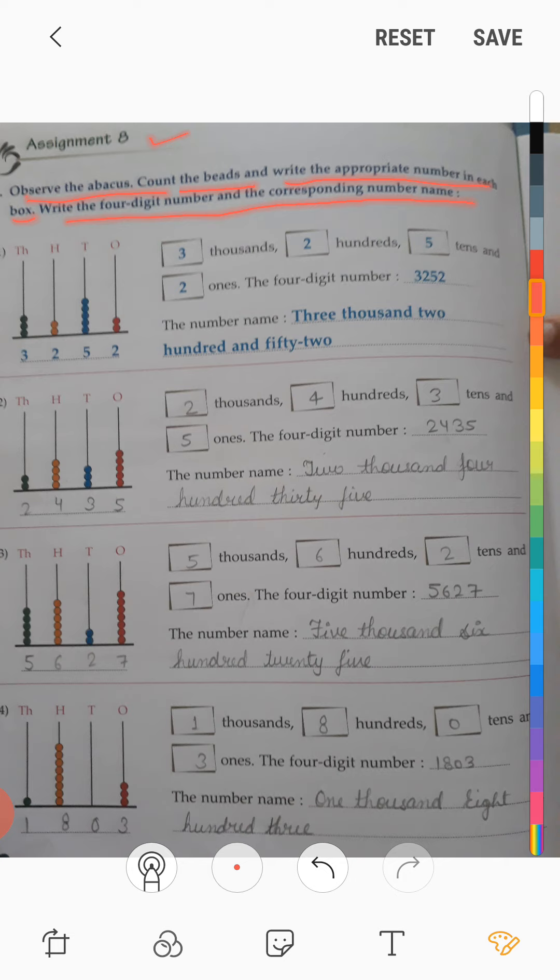And write what you can count. Once line two beads, write 2. Tens line one, two, three, four, five beads, write 5. Hundreds, two beads, write 2. Thousands 1, 2, 3, three beads write 3. Now the place where 1000, 100, 10 and 1s.